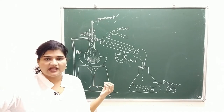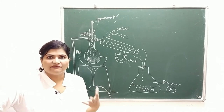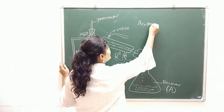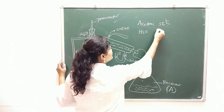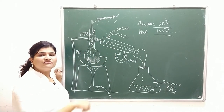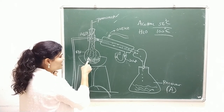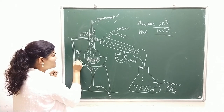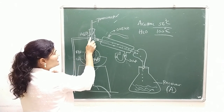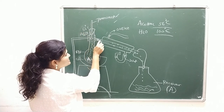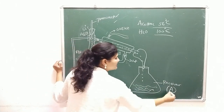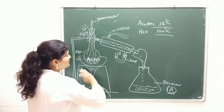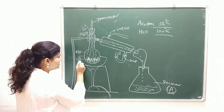This simple distillation assembly can be used to separate components of a mixture that have a sufficient difference in their boiling points. For example, acetone has a boiling point of 56°C and water has a boiling point of 100°C — there is an appreciable difference. If I heat the mixture to 56°C, acetone vaporizes, the vapors pass to the side arm, condense, and acetone is collected in the first receiver as the first fraction.